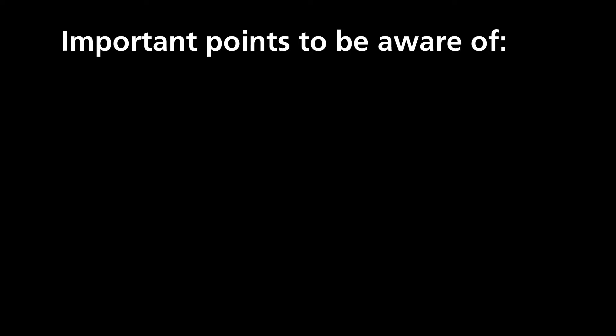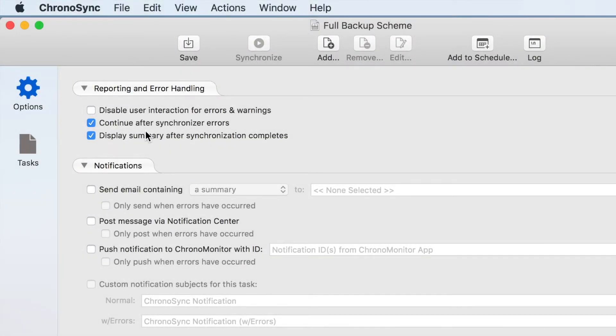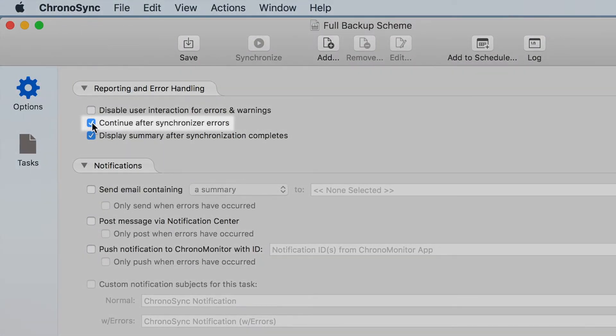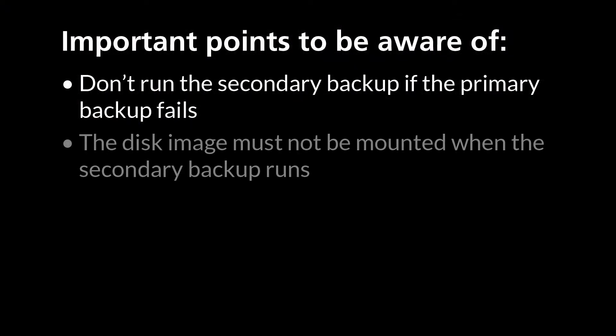Before calling it a wrap, there are a few important points you need to be aware of. The first is that if anything goes wrong when running your primary backup, you do not want to run your secondary backup until those problems get sorted out. This is because you don't want to take the chance that any data corruption on the disk image ends up getting replicated in the cloud. This is why we disabled the Continue After Synchronizer Errors setting, so that you don't end up with two corrupt backups. The second point to be aware of is that the disk image must not be mounted when it is backed up to the cloud. Backing up a mounted disk image could result in a corruption of the backup disk image.